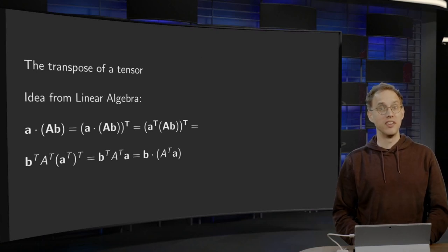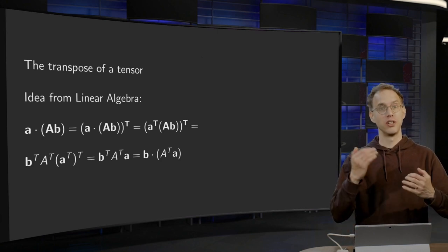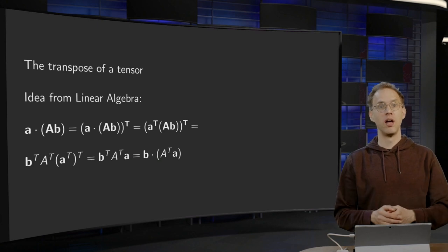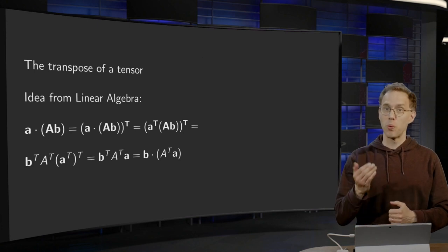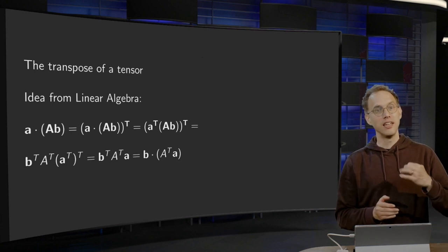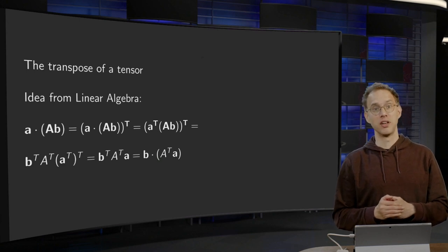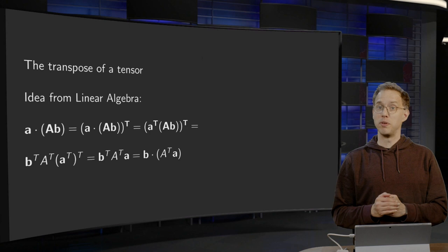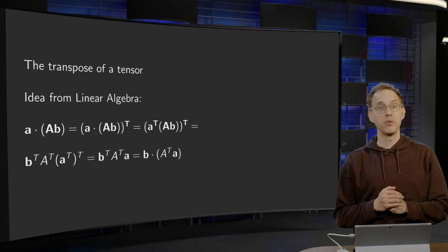How can we define the transpose of a tensor? With matrices this is easy — just interchange rows and columns. But for tensors we do not want to rely on the matrix representation, so what can we do? In this video you will see that we can still define the transpose of a tensor. The definition looks a bit odd, but fortunately we also see that we have all our normal computational rules.